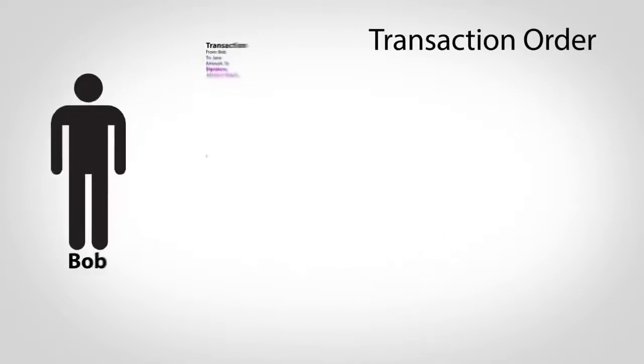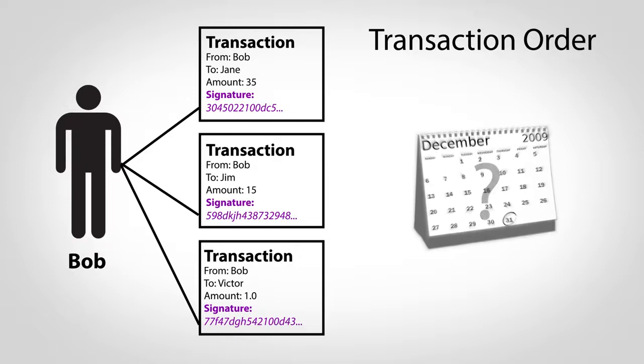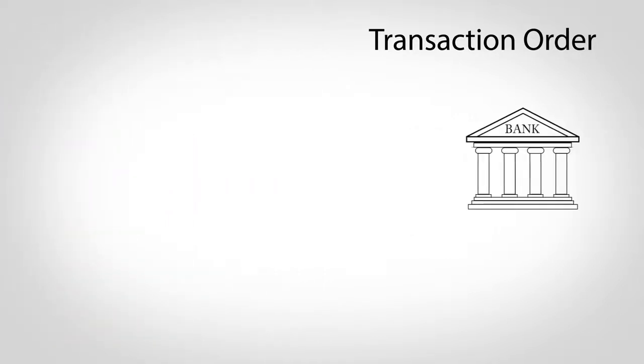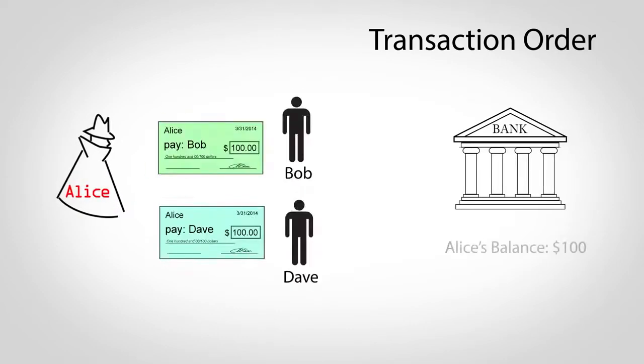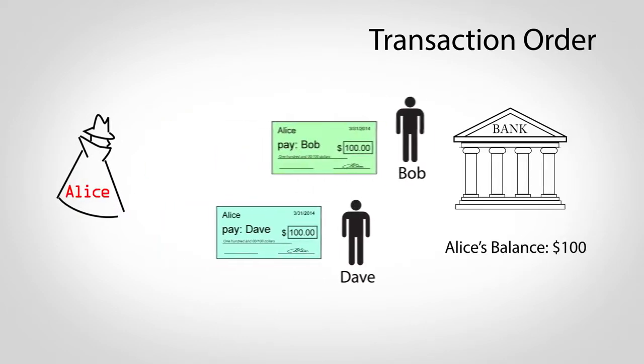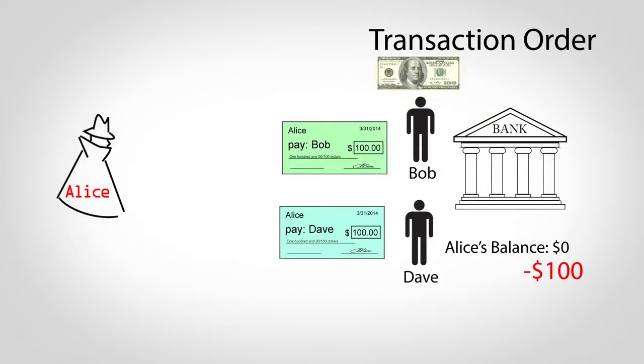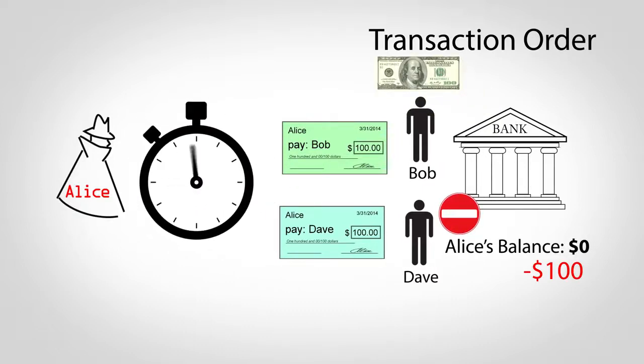While the mathematical signatures prove who sent a transaction, they can't prove when it was sent, and this turns out to be problematic. In our traditional banking system, if Alice wrote two checks but only had enough money to cover one of them, the bank would pay the first person attempting to cash his check but refuse the second because Alice's account would be empty.